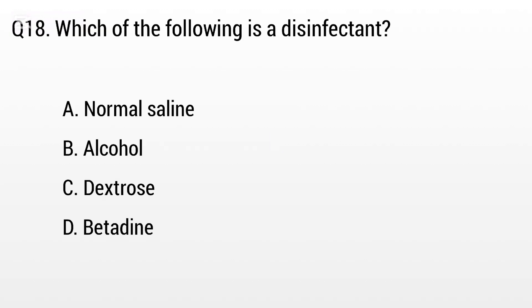Question 18: Which of the following is a disinfectant? Options include A: Normal saline, B: Alcohol. The right answer is option B: Alcohol.